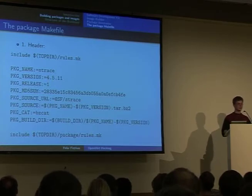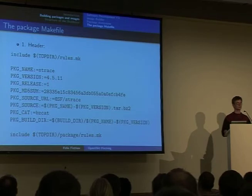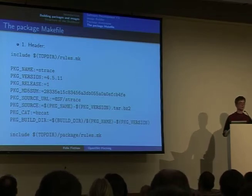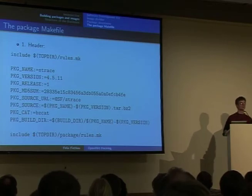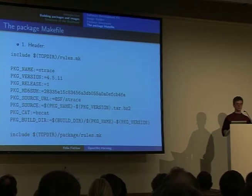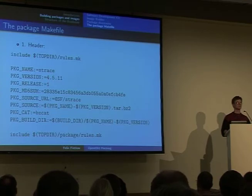And the next variable is also quite important. If you instruct the build system to download packages from an external source, we use MD5 sums to verify that the download is saved correctly. So if the getter program for some reason cancels during the download, then this MD5 sum will obviously not match and you will see a more descriptive error message instead of just a tar error or something like that.